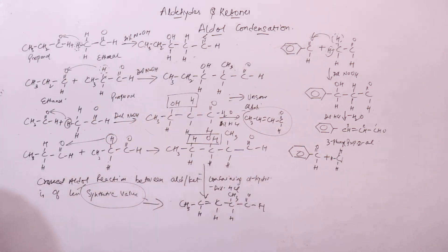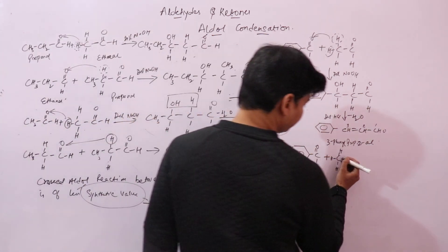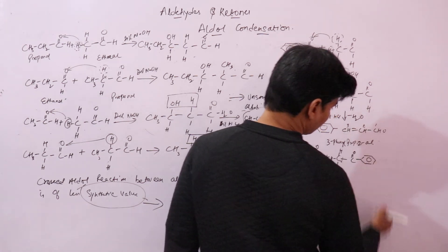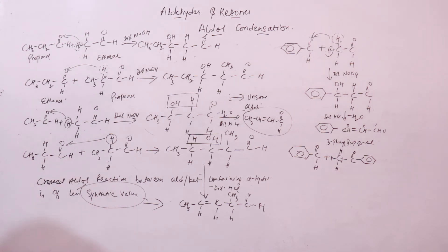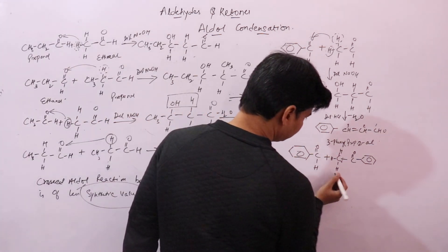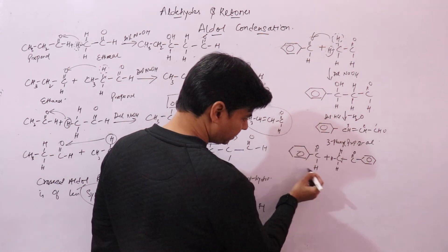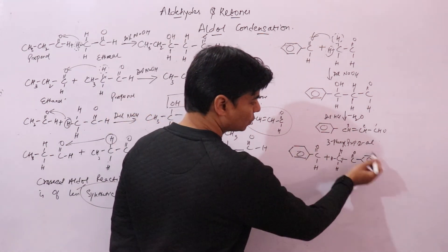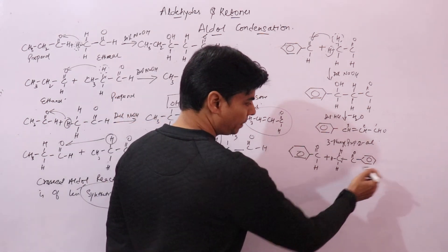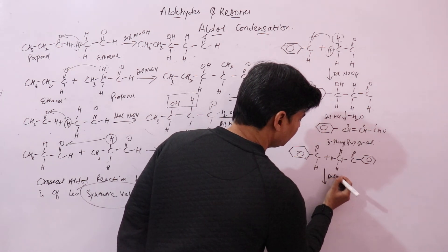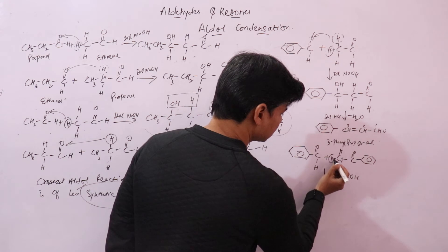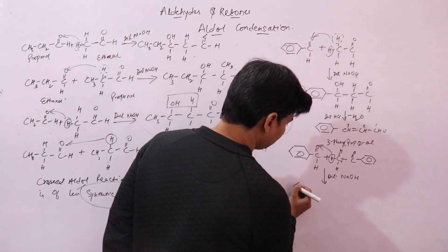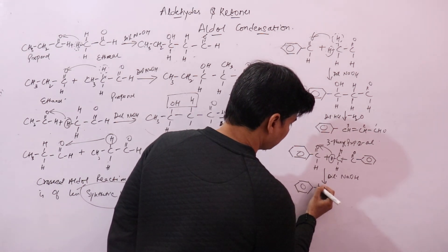Acetophenone (CH₃COC₆H₅) contains alpha hydrogen while benzaldehyde does not. In presence of dilute sodium hydroxide, the alpha hydrogen of acetophenone attacks the carbonyl carbon of benzaldehyde to form a beta-hydroxy ketone product with an OH group.